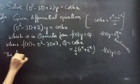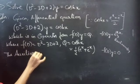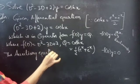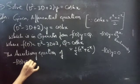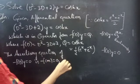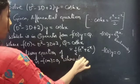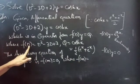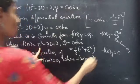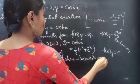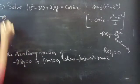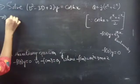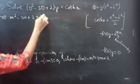So the auxiliary equation corresponding to f(D)·y = 0 is f(m) = 0, where f(m) is obtained by replacing the differential operator D with m. Then you will get f(m) = m² − 3m + 2, and our auxiliary equation is m² − 3m + 2 = 0.